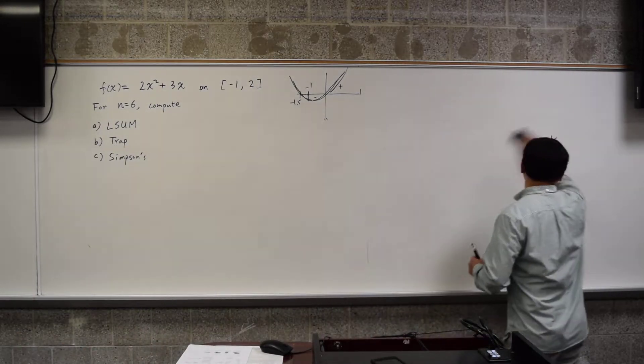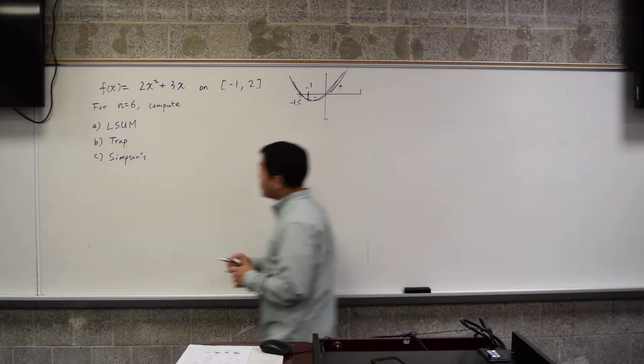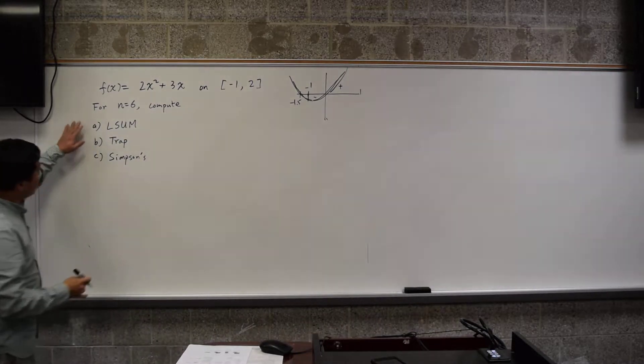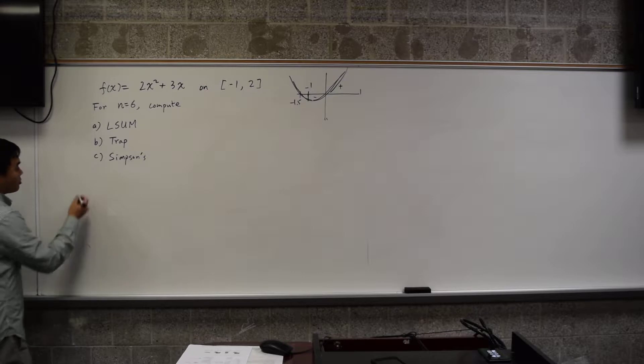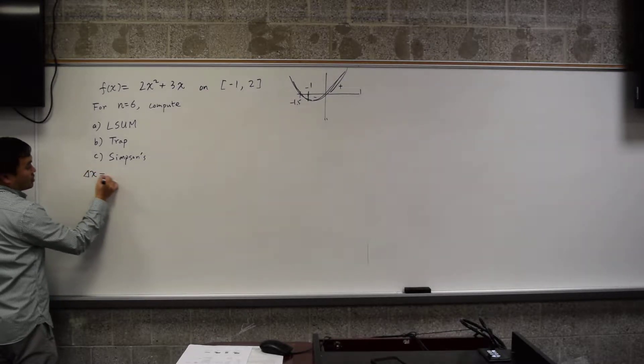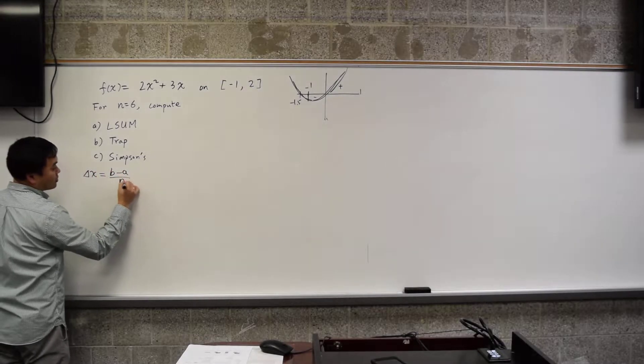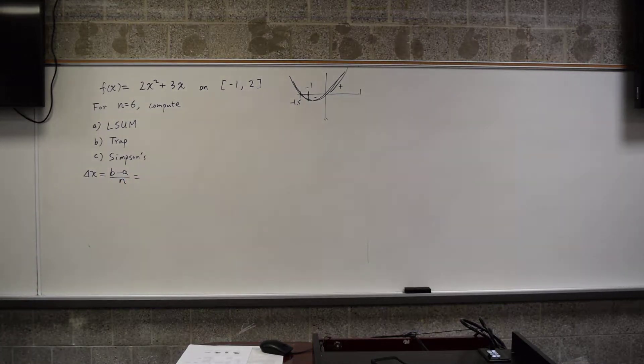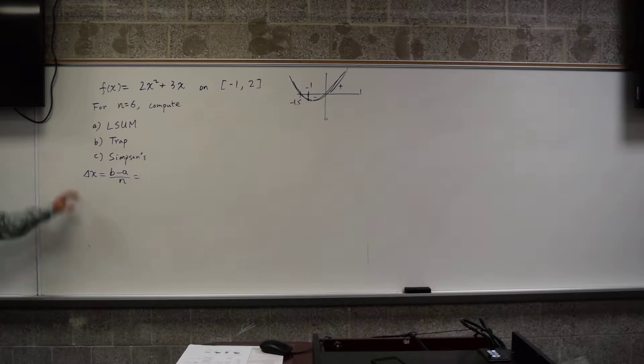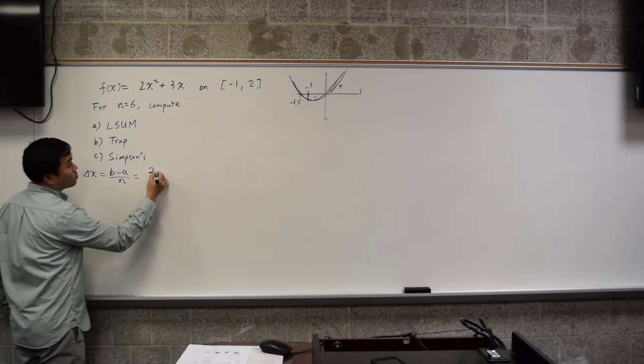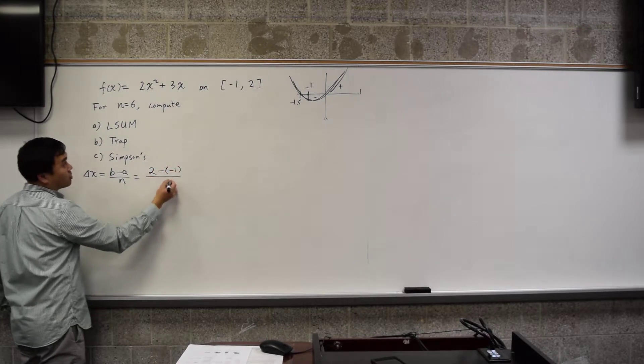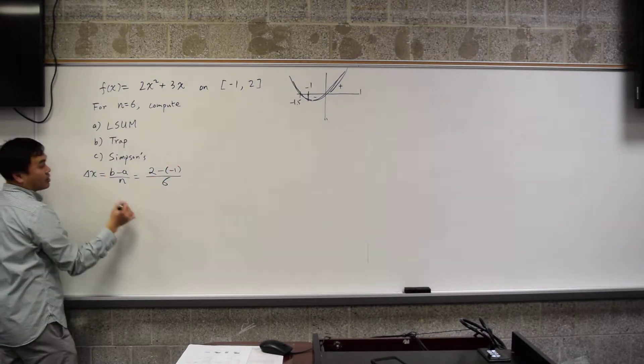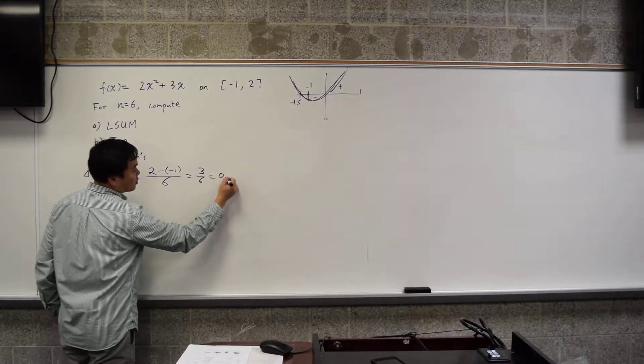Going back, the formula for whether you're using L-Sum, Trapezoid, or Simpson's, you need to know delta x equals to b minus a over n. It's so fundamental, basic, easy to remember formula. You should always write this first before doing any of these approximation questions. It's a definite must, so you write this formula first, and you do 2 minus negative 1 over the number of intervals, n is 6, so you have 3 over 6, which is 0.5.